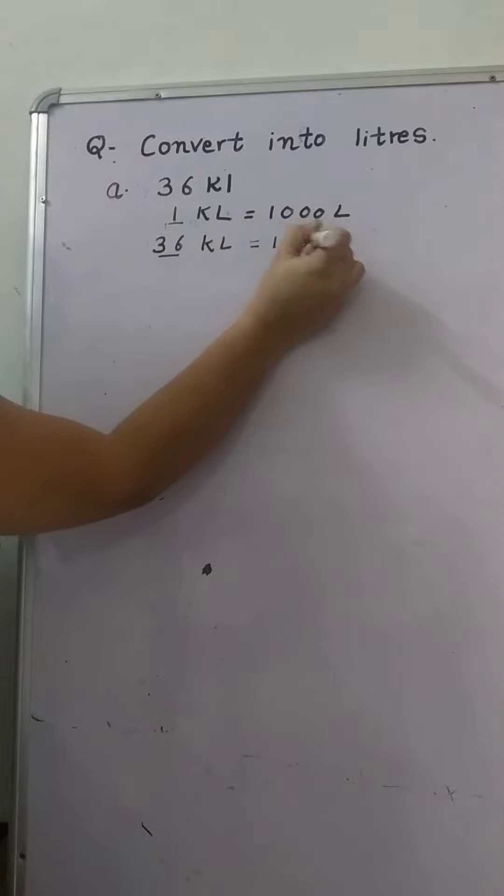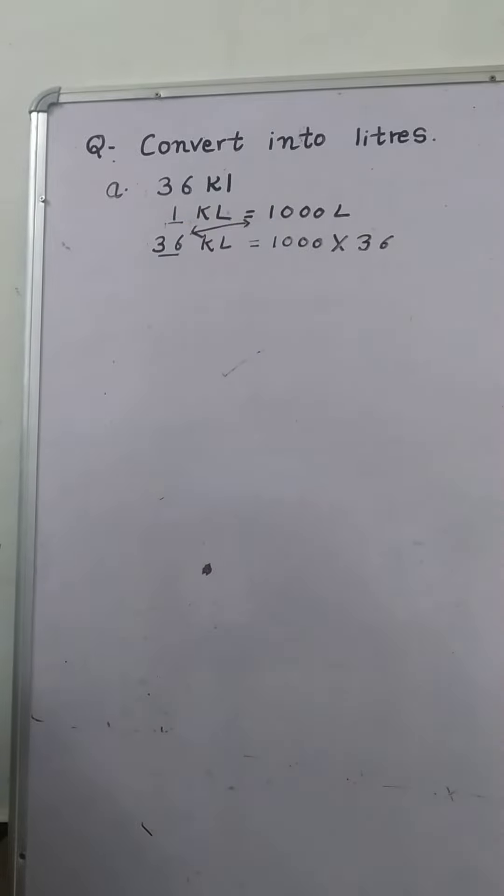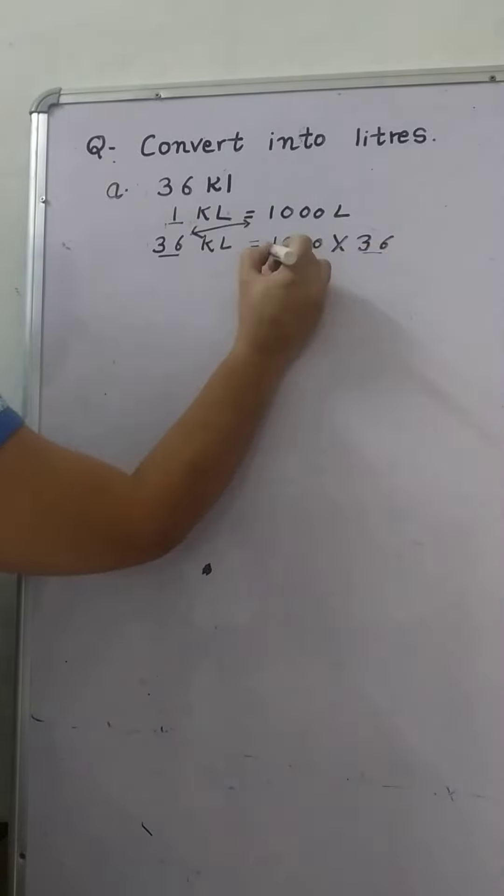So here we will multiply 1000 by 36. This we will multiply. Now 36, 1 sum 36. And how many zeros are here? 3. So we will write 3 zeros here.